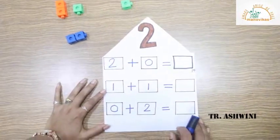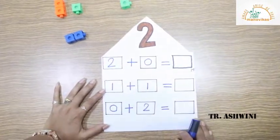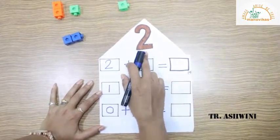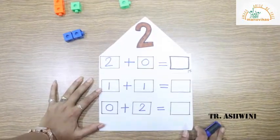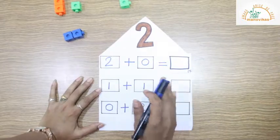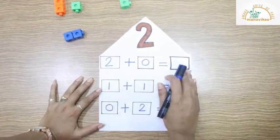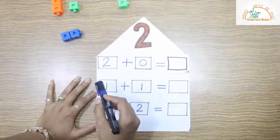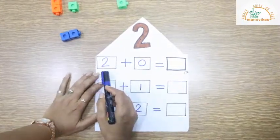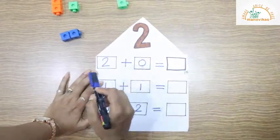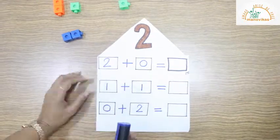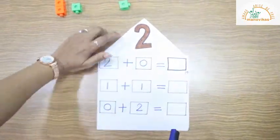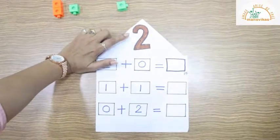Now we are going to learn adding fact for 2. Adding fact means we will get the same answer — only the numbers shuffle. We will take 2 plus 0. With the help of this cube we are going to solve this activity, that is adding fact of 2.